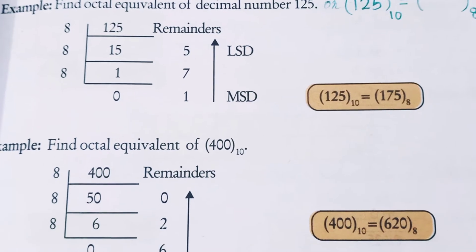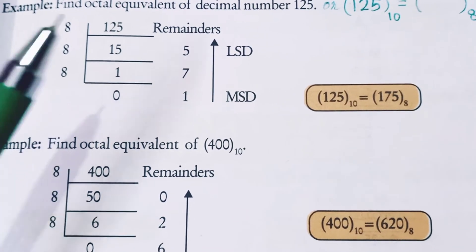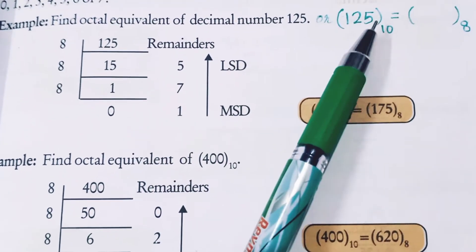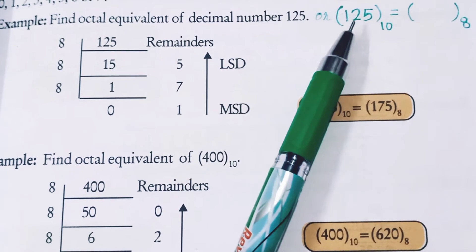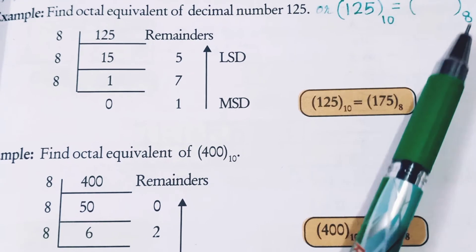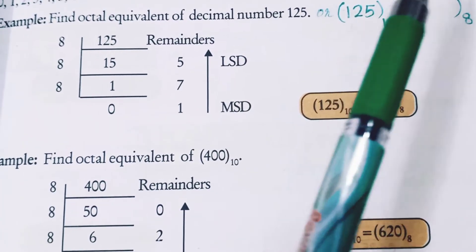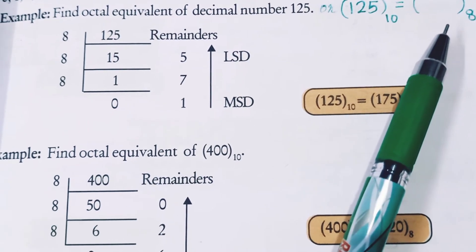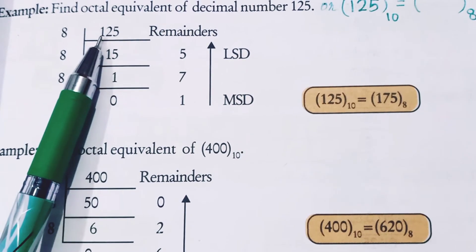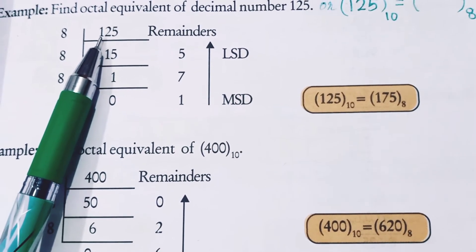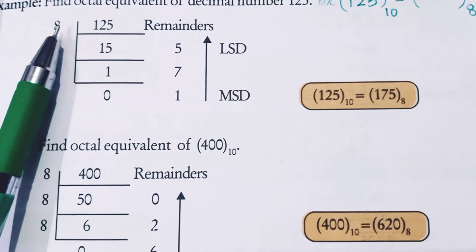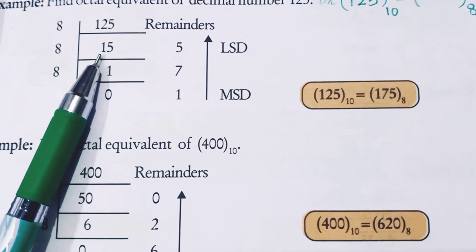Let's go to the example. Here is our question: Find the octal equivalent of decimal number 125. We need to fill in the blank: 125 to the base 10 is equal to blank to the base 8. So our decimal number is 125, and we will convert 125 to octal by dividing by 8.